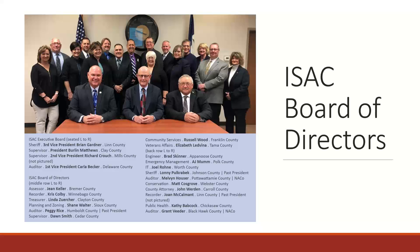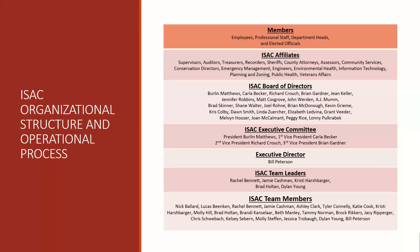These officers include a president and three vice presidents, and make up what's called the ISAC executive board. Also serving on the ISAC board are three ISAC past presidents and two representatives from the National Association. These ISAC officers and board members comprise the organization's governing body, and these operational processes are outlined in ISAC's organizational documents. As members, you have approved and amended our Articles of the Corporation over the years. They were first adopted in October of 1964, but have been amended several times since then. In addition, the ISAC board of directors has adopted the organization's bylaws.